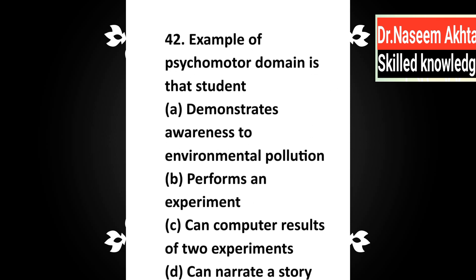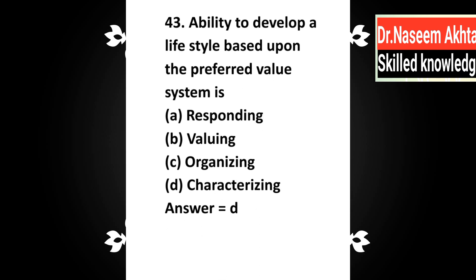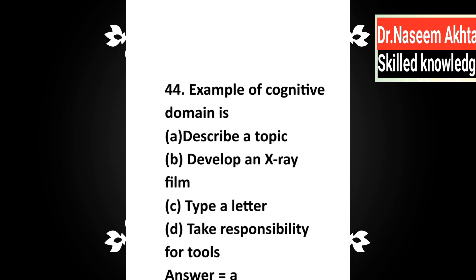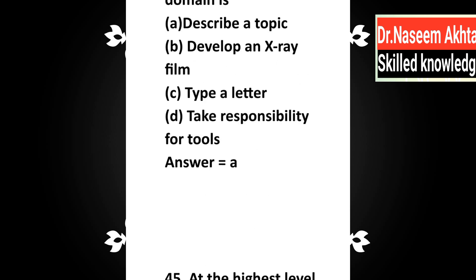Question 42: An example of psychomotor domain is that students — a) demonstrate awareness of environmental pollution, b) perform an experiment, c) can compare results of two experiments, d) can narrate a story. Correct answer is B: perform an experiment. Question 43: Ability to develop a lifestyle based upon a preferred value system is — a) responding, b) valuing, c) organizing, d) characterizing. Correct answer is D: characterizing. Question 44: An example of cognitive domain is — a) describe a topic, b) develop an X-ray film, c) type a letter, d) take responsibility for tools. Correct answer is A: describe a topic.